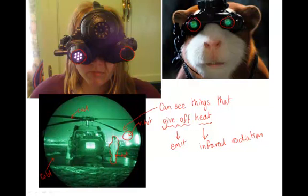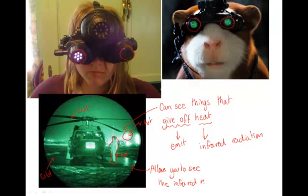The thing to remember is: all things emit infrared radiation, and all things absorb infrared radiation. These night vision goggles allow you to see the infrared radiation which you can't normally see — it's the heat being emitted from the objects in the picture.